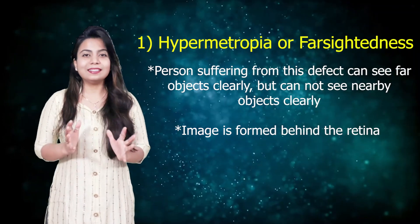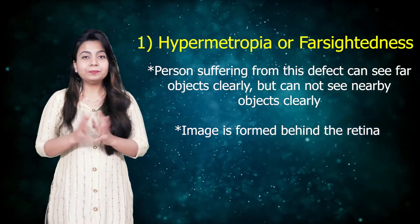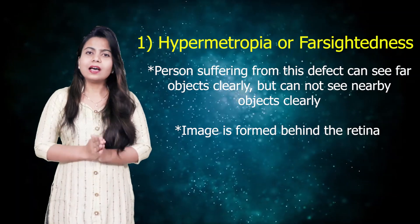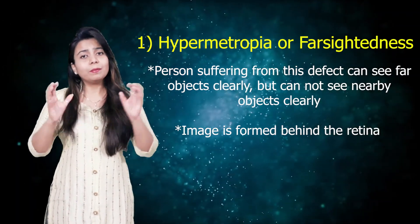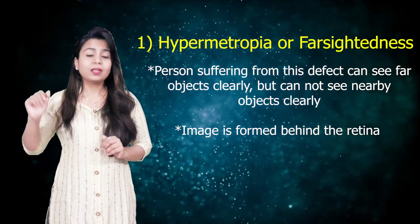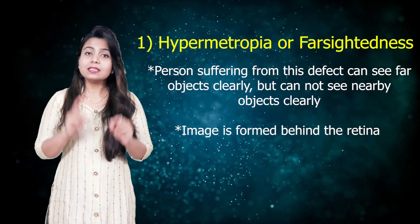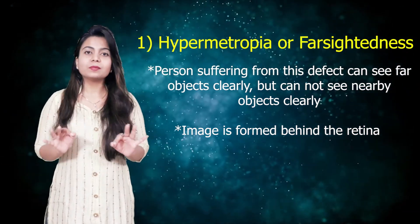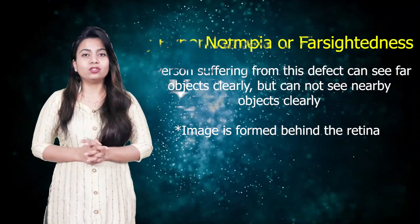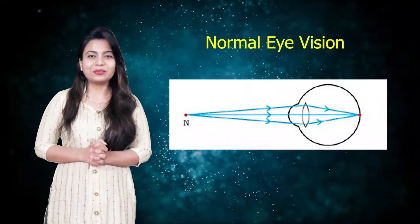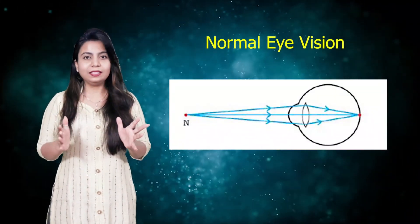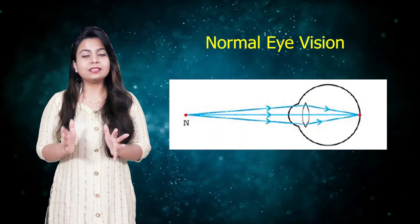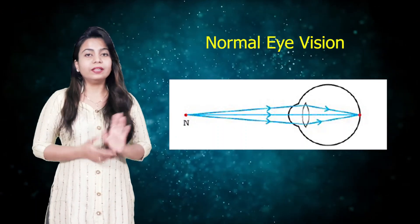In hypermetropia, a person is able to see far-off objects but cannot see nearby objects clearly. This condition is normally seen in old age persons. Normally, we know that the image is formed on the retina, but in this case, the image is formed behind the retina. I can explain you with the help of this picture — look at the screen. Here, you can see a normal eye, and in a normal eye, the image is formed on the retina.